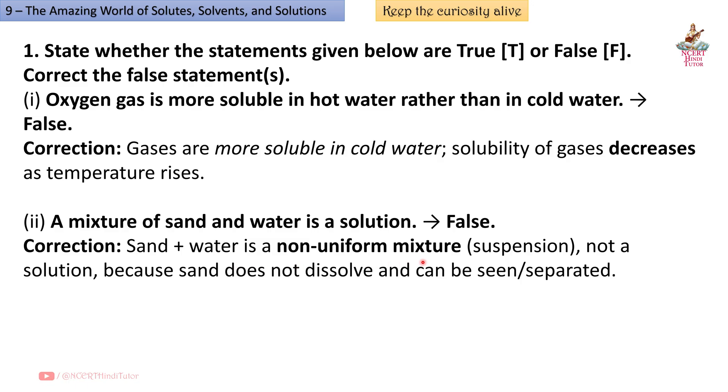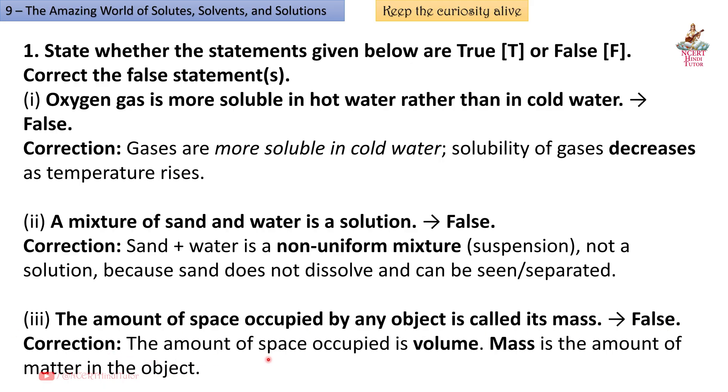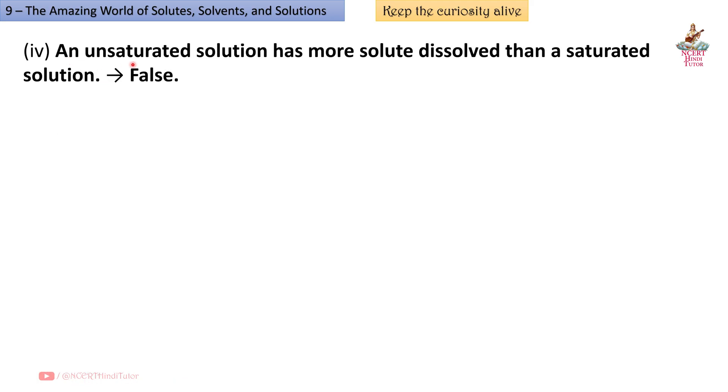Third: The amount of space occupied by any object is called its mass. So friends, this is false. Correction: The amount of space occupied is volume. Mass is the amount of matter in the object.